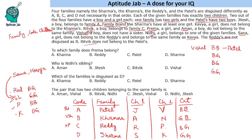This completes our arrangement of the four families, their codes, and the two children of each family. Which family does Prema belong to? Prema belongs to the Redi family. Nidhi's sibling is Aman. Which family is disguised as D? That is Sharma. The pair that has two children belonging to the same family — Jitesh and Vishal are siblings. That is the solution to the set and the answers to the questions.